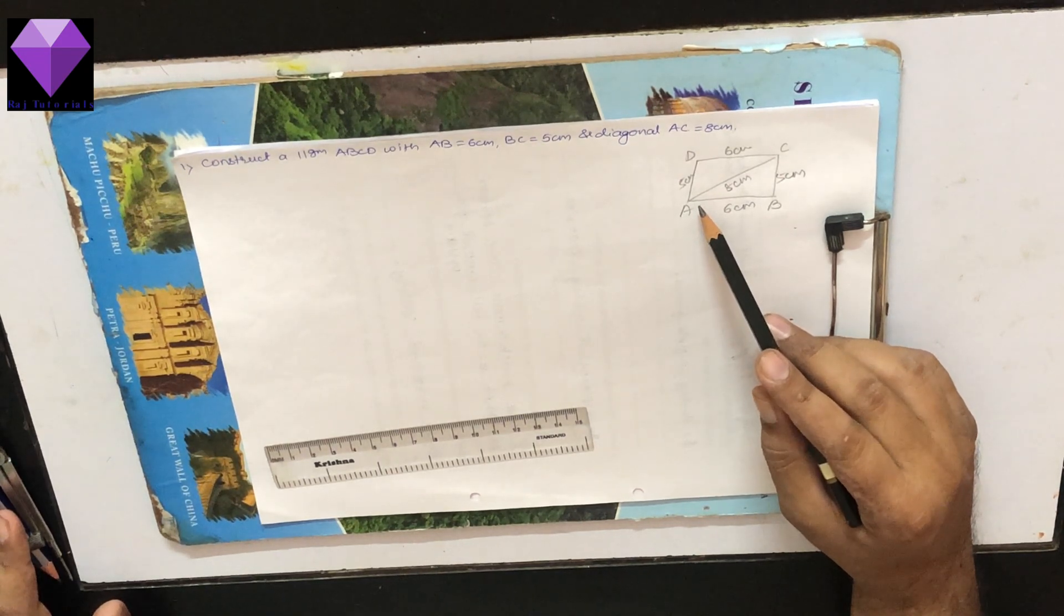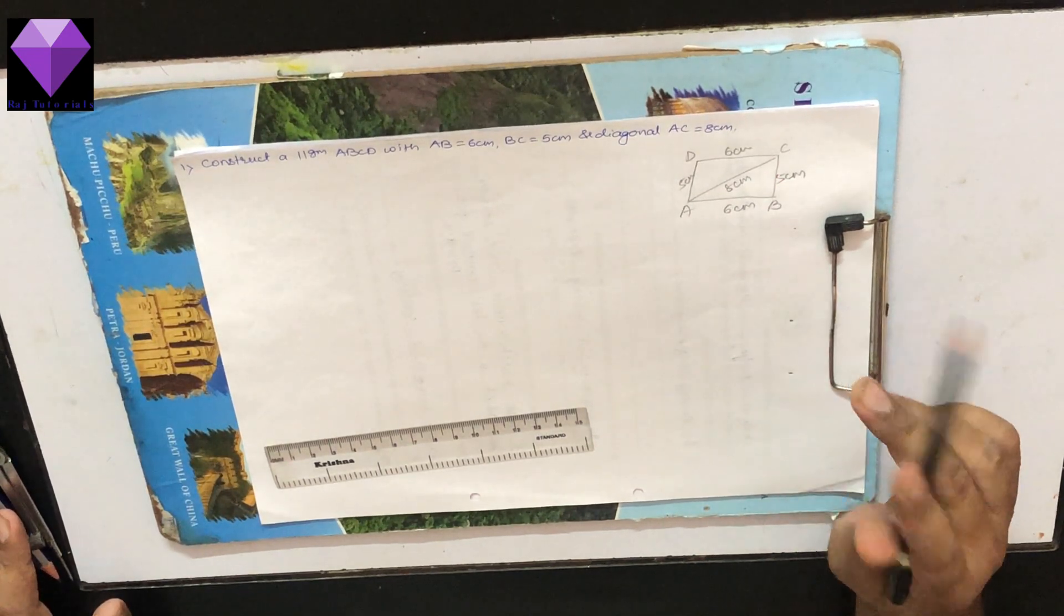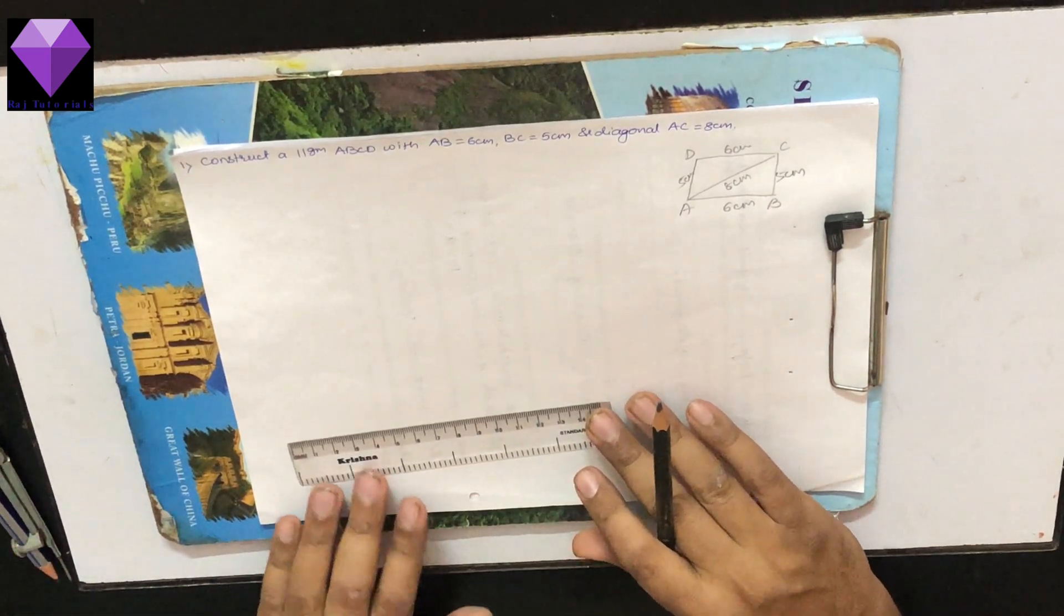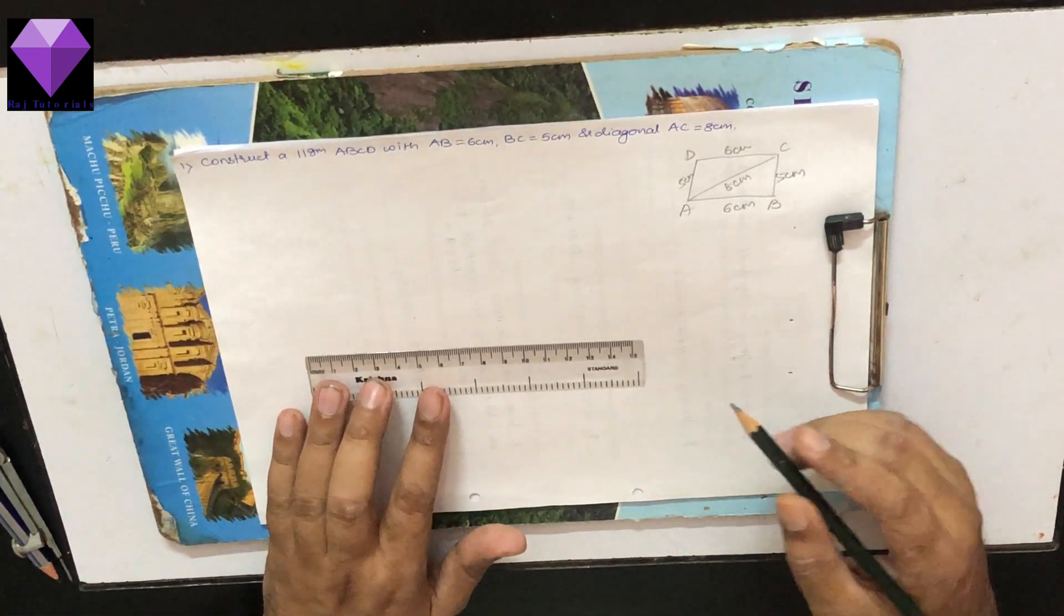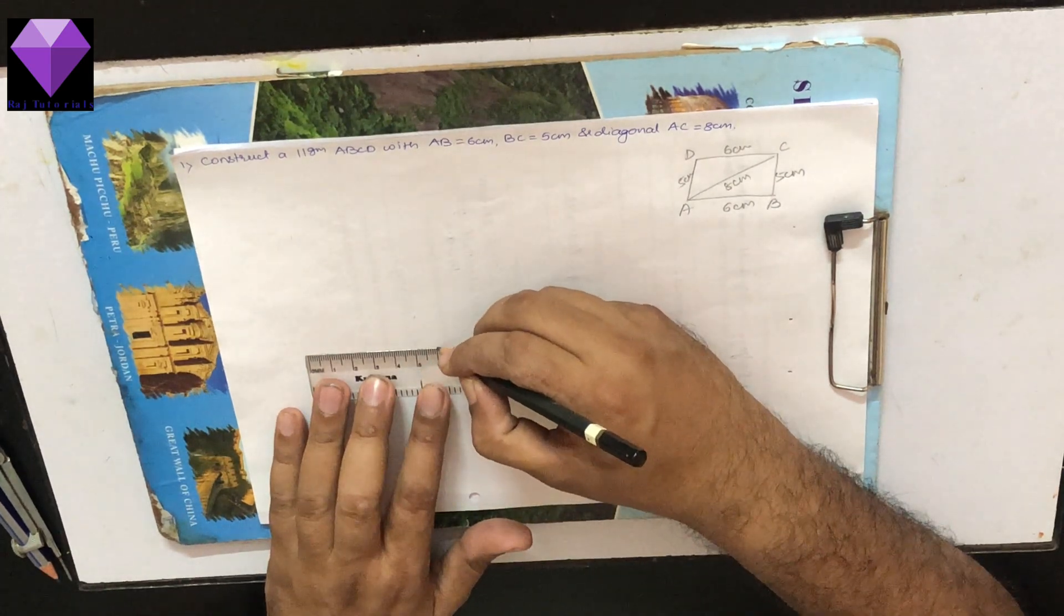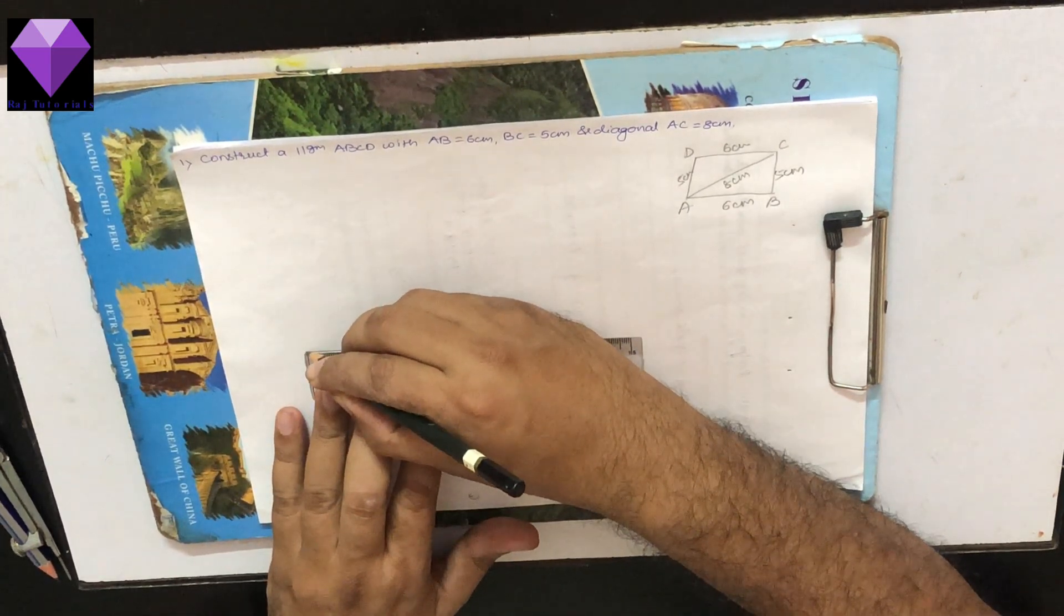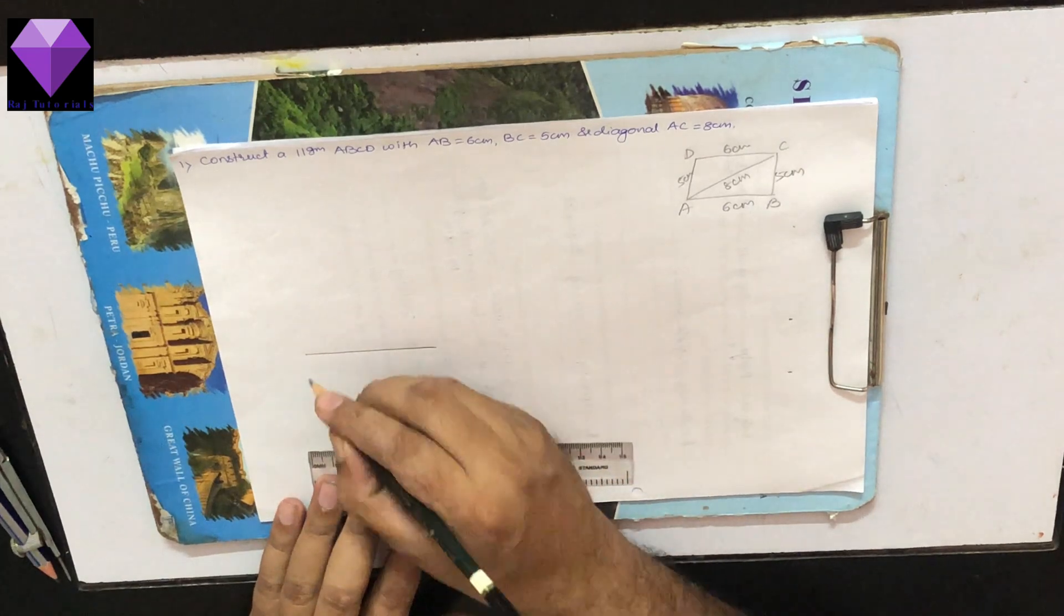We know that in a parallelogram opposite sides are equal and parallel, so we will be using that property. First I am making a 6 cm base AB.